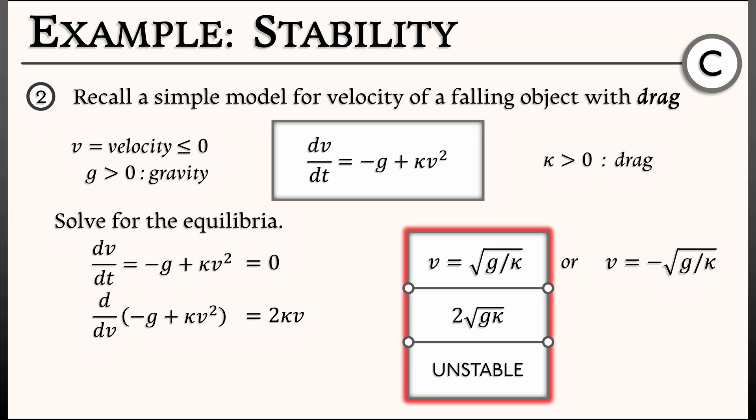On the other hand, if I evaluate this at the negative equilibrium, at minus root g over kappa, then the derivative evaluates to minus 2 square root of g times kappa. That's a negative number. This is a stable equilibrium.